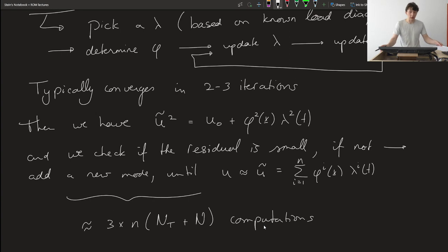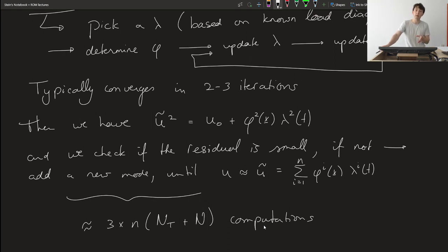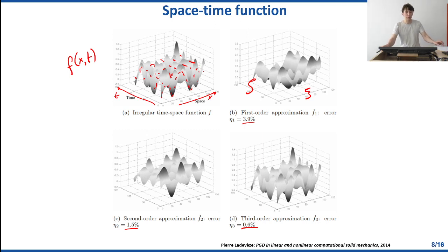That is the core concept of PGD — the last model order reduction technique I wanted to talk about. It's starting to get a little more complex and I'm being a bit more vague in my explanation, because I don't think it's essential that you understand all the details here. I want to give you a flavour of how complex these things can get, what we can achieve with them, and that there's still sufficient research involved.